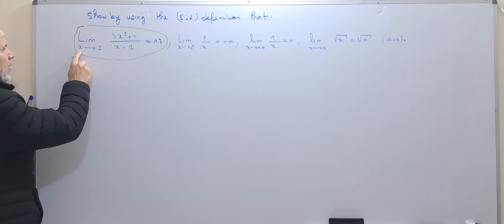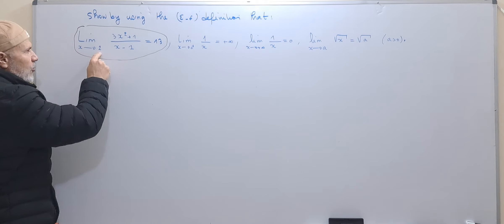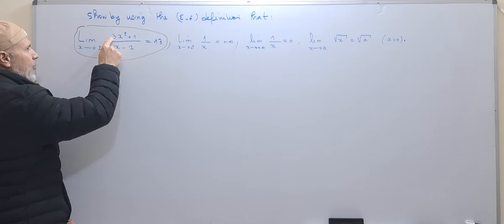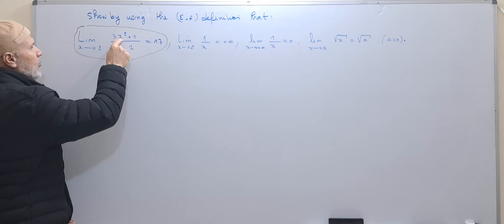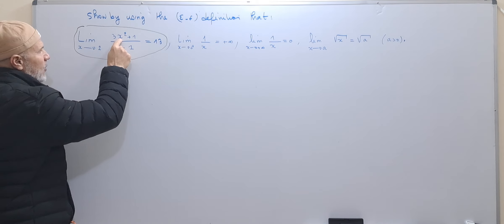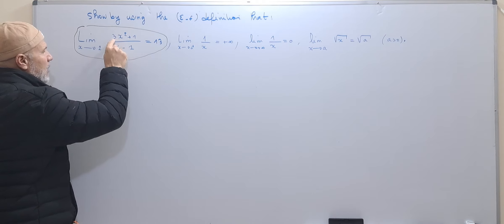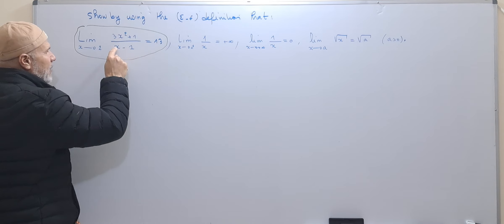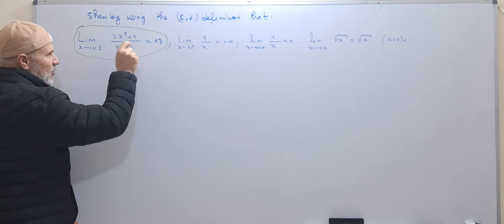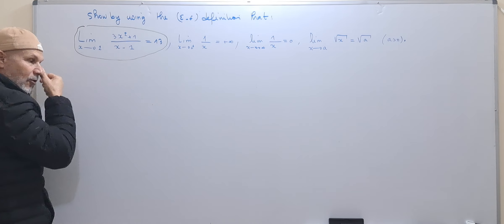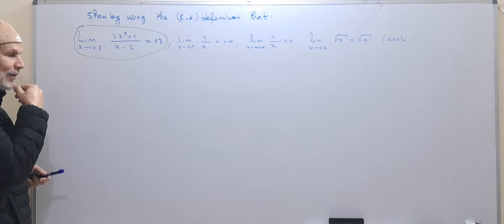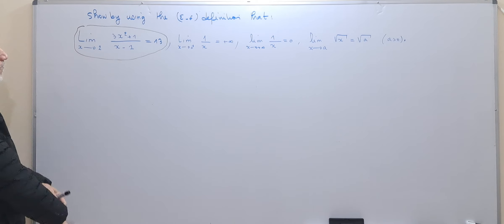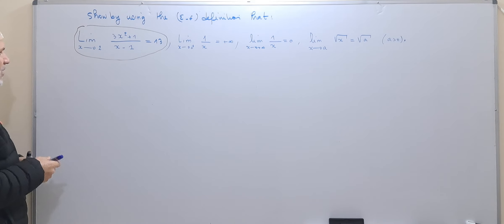When f(x) is evaluated at x = 2, we have 3 times 2 squared equals 12, plus 1 is 13, divided by 2 minus 1 is 13. So the limit value is confirmed to be 13. Now, how can we use the epsilon-delta definition?